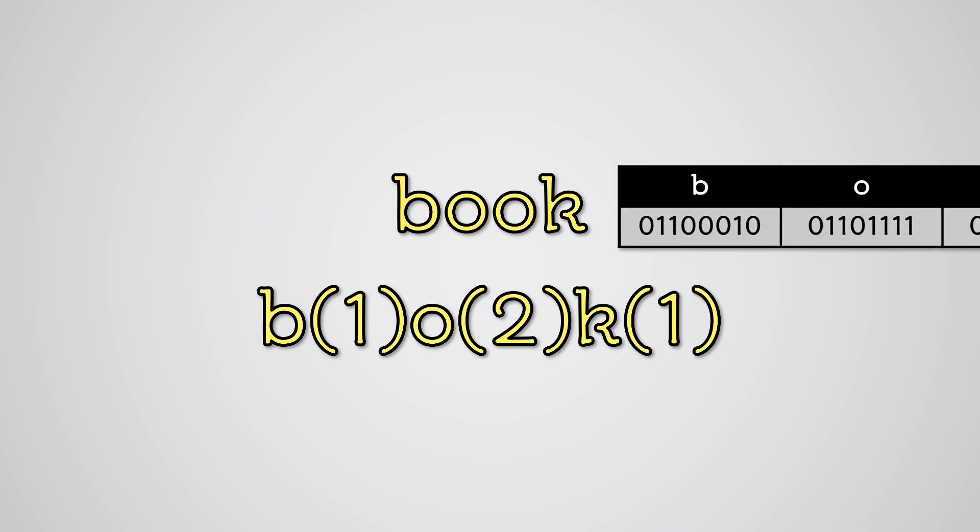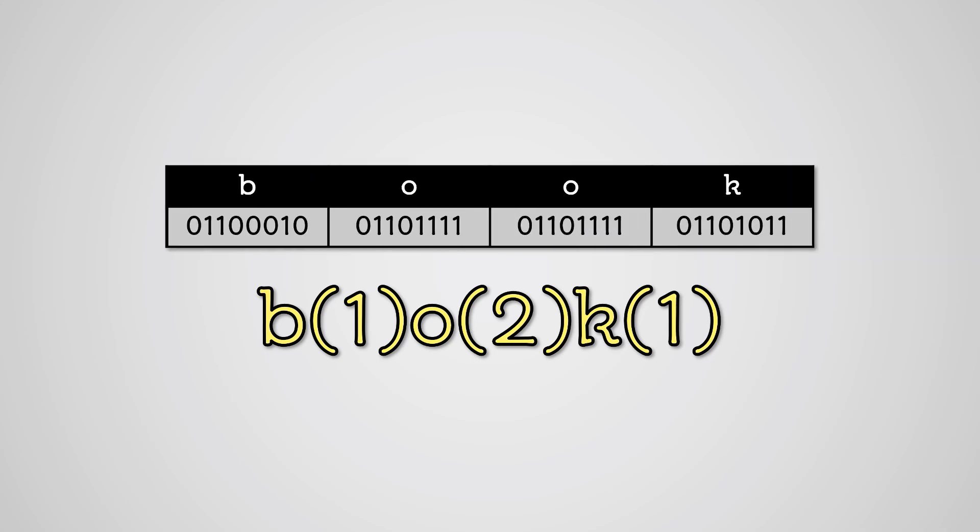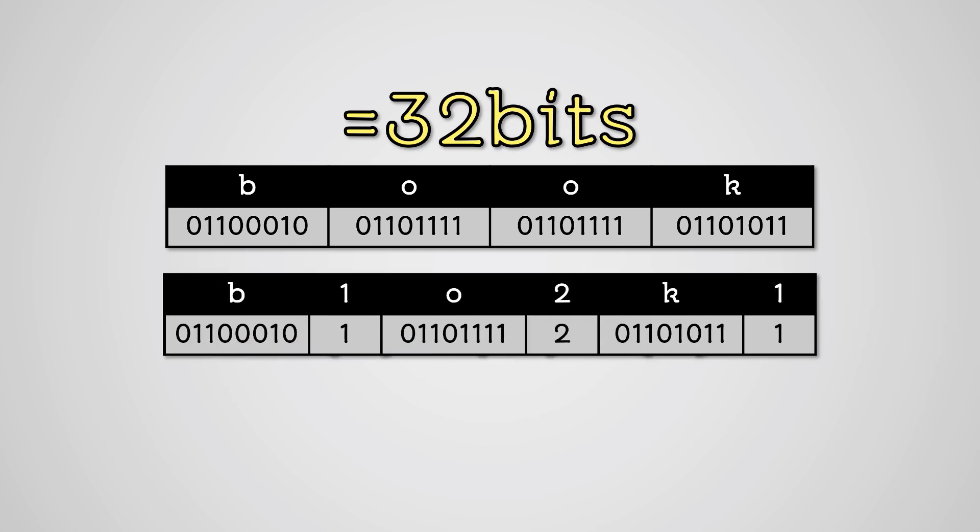However, look at the word book in ASCII code. Sticking these binary digits together gives a length of 32 bits. Now if we apply RLE to this, we get this. This gives us a run length of 24 bits for the characters.